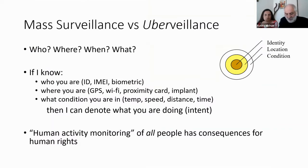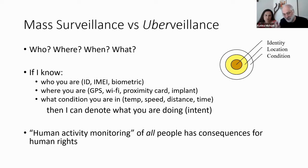Uberveillance has to do with the fundamental who — someone's identity — where, someone's location, and when, i.e. timestamps, in an attempt to derive motivation, what, the result, and even the how, the method, the plan, and increasingly the thought.